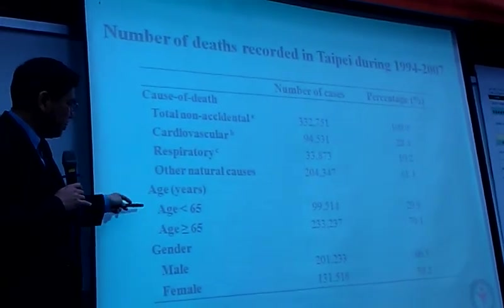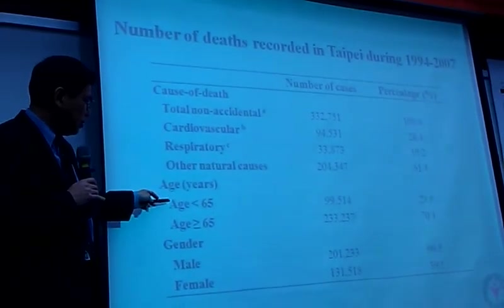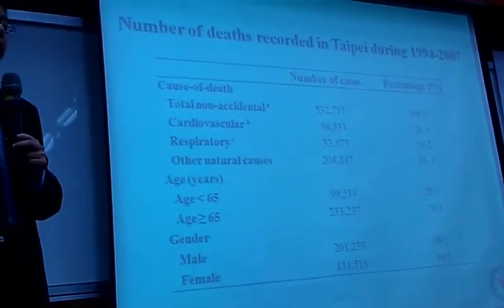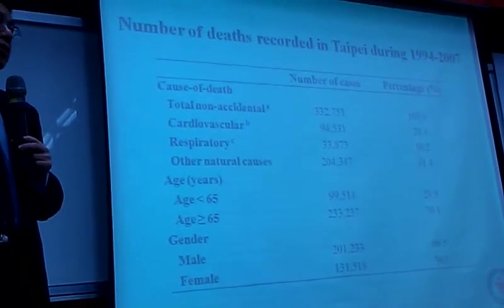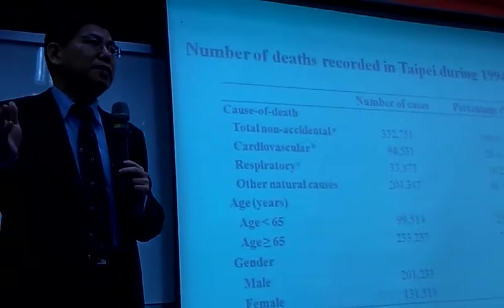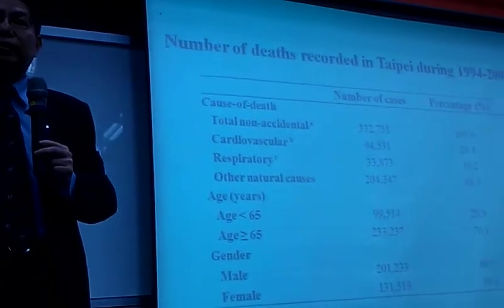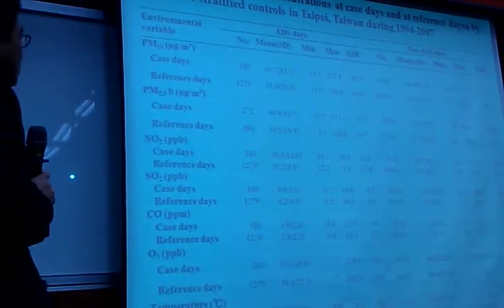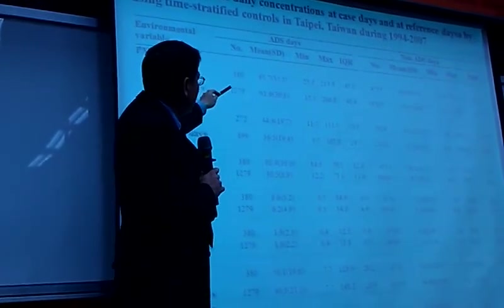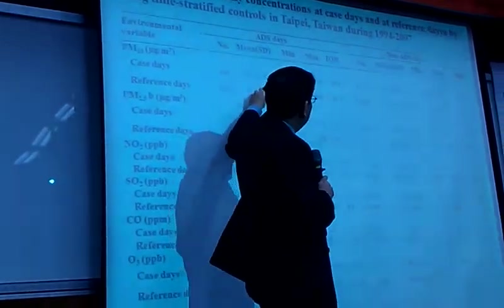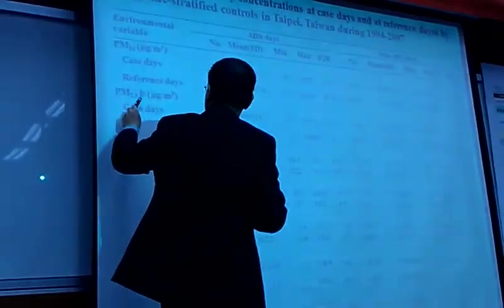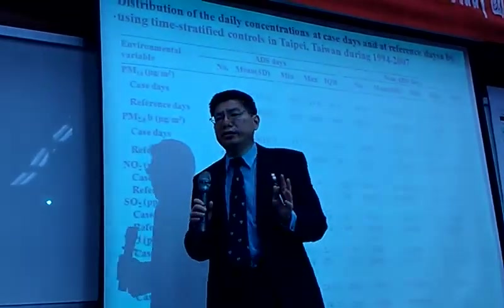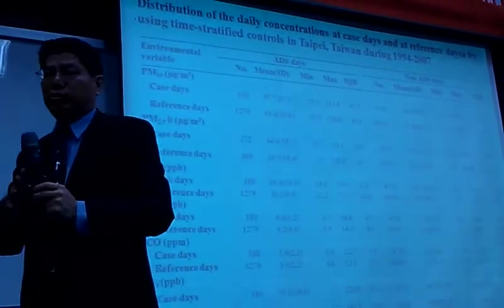We specifically looked at elderly people aged above 65 and examined whether there's a gender difference — because pollution sometimes has different effects on different genders, which is very intriguing. Comparing Asian dust storm days versus non-dust storm days, PM10 was about 85 versus 50, and PM2.5 was 44 versus 31. You can clearly see that dust storm days have higher pollution — that's the message.